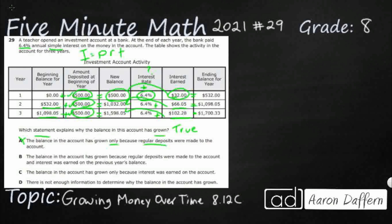B. The balance in the account has grown because regular deposits were made. Yes, $500 a year. And interest was earned on the previous year's balance. Yeah, that's that interest. It's two sources of growth. The deposits and the interest rate. So that's looking pretty good.